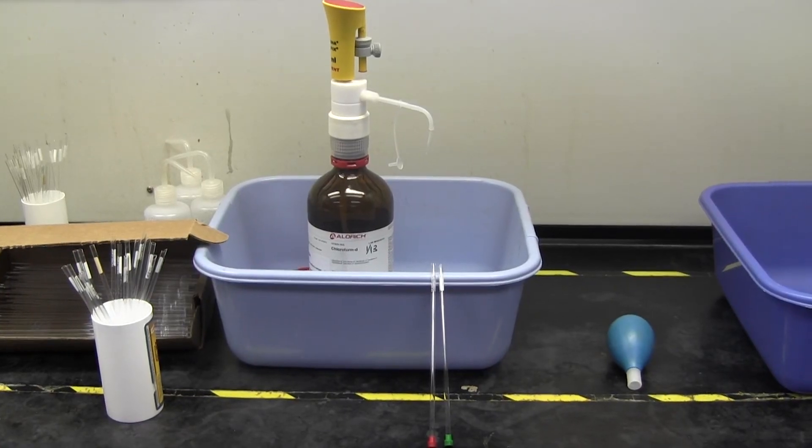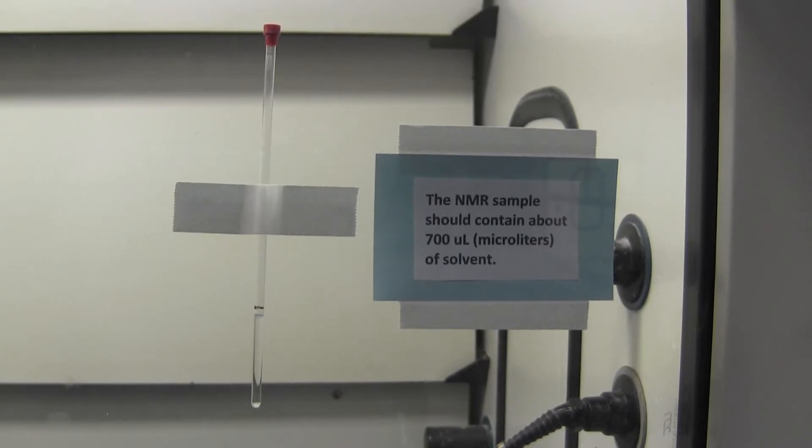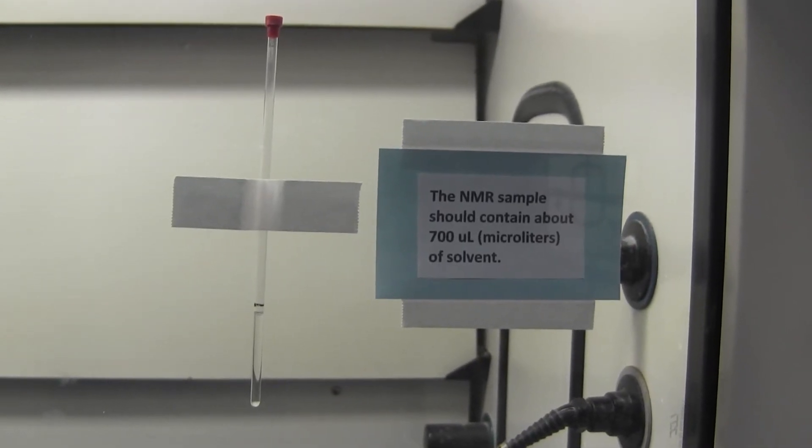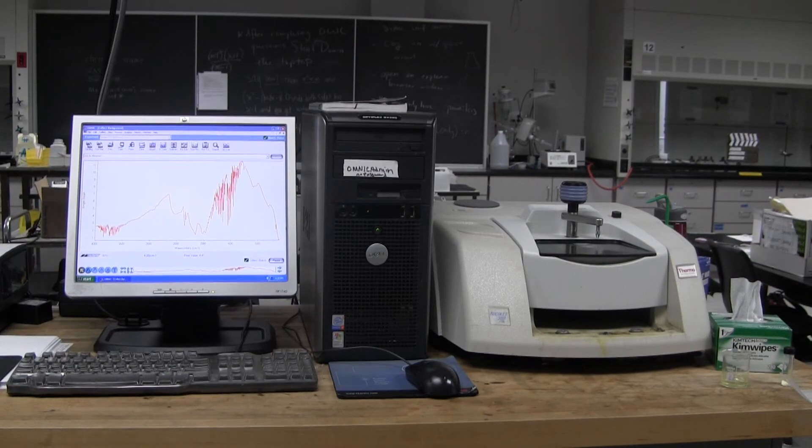Begin by preparing an NMR tube with your sample. You will use a few drops of this to obtain an IR. Directions on how to prepare an NMR tube are also posted on Moodle. Once you have the NMR sample prepared, proceed to the IR machine.